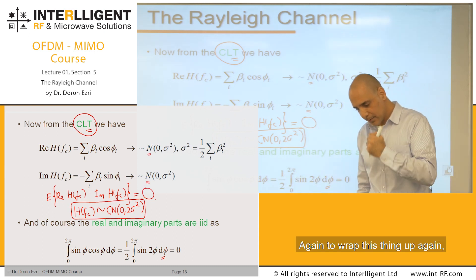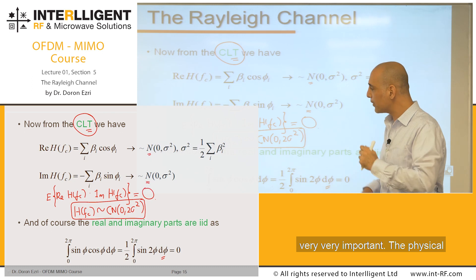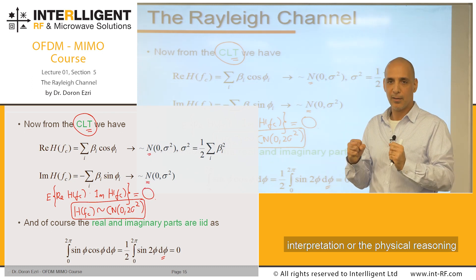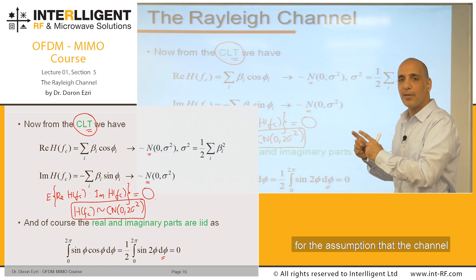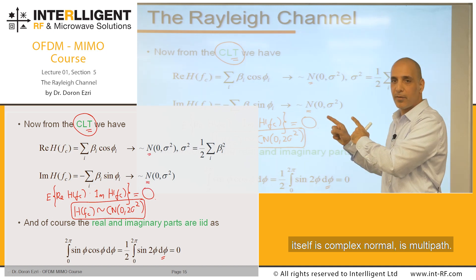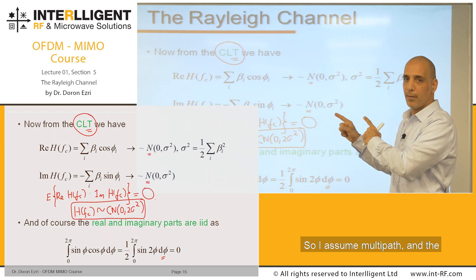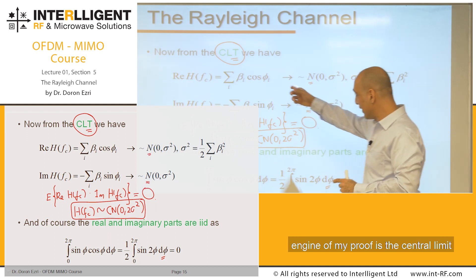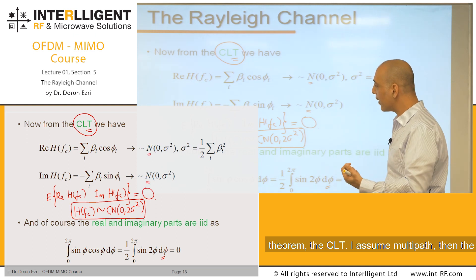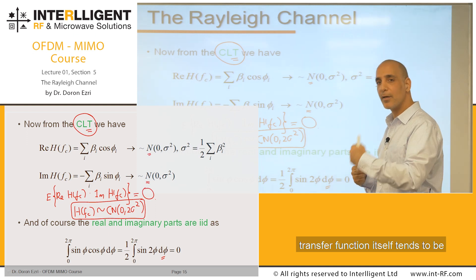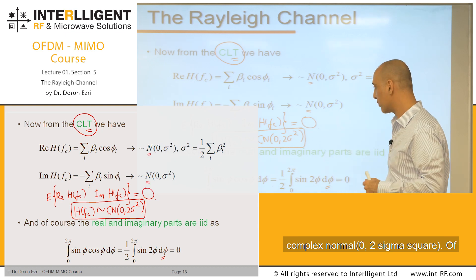To wrap this thing up, very important: the physical interpretation or the physical reasoning for the assumption that the channel itself is complex normal is multipath. I assume multipath, and the engine of my proof is the central limit theorem (CLT). I assume multipath, then the transfer function itself tends to be complex normal.